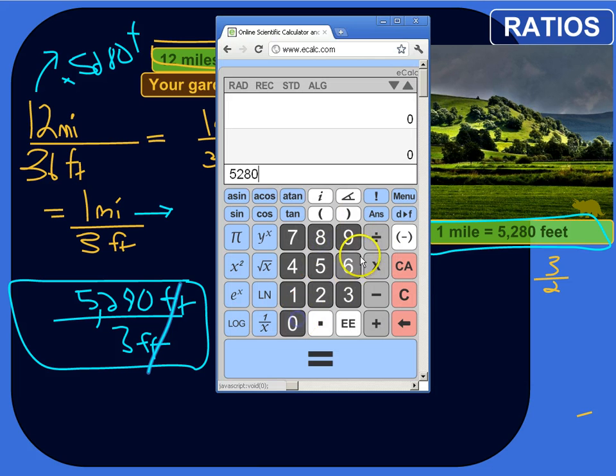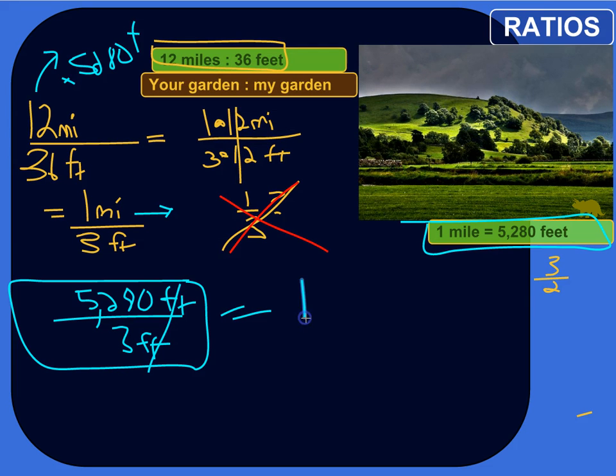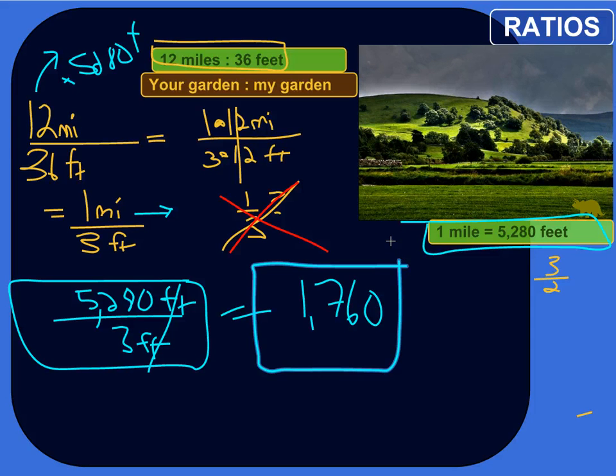5,280 divided by 3 is 1,760. So what this means is your garden is 1,760 times bigger than mine. The length of your garden is 1,760 times bigger than the length of my garden. So by converting to the same units, we get an accurate picture here. And then we can really simplify it to its most simple form. This is simplified all the way. Units are gone. Now this is a number I can deal with. I could use this in an equation.